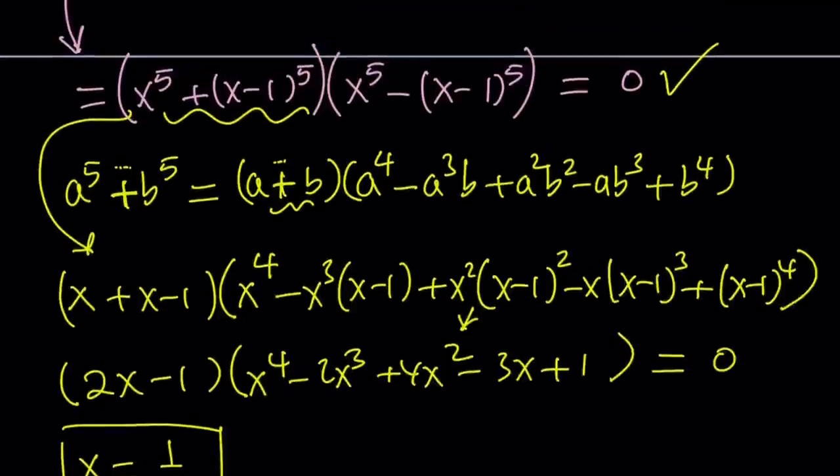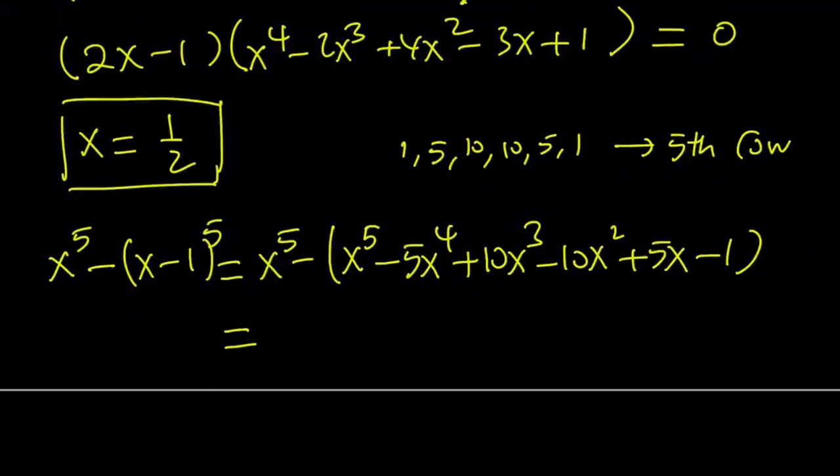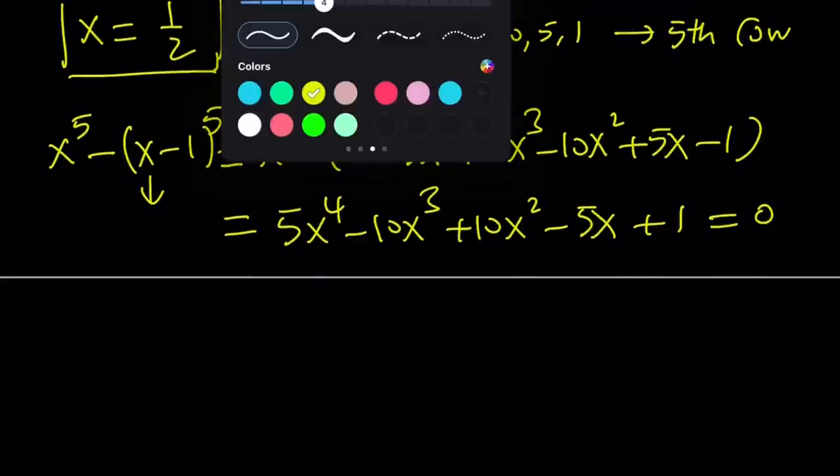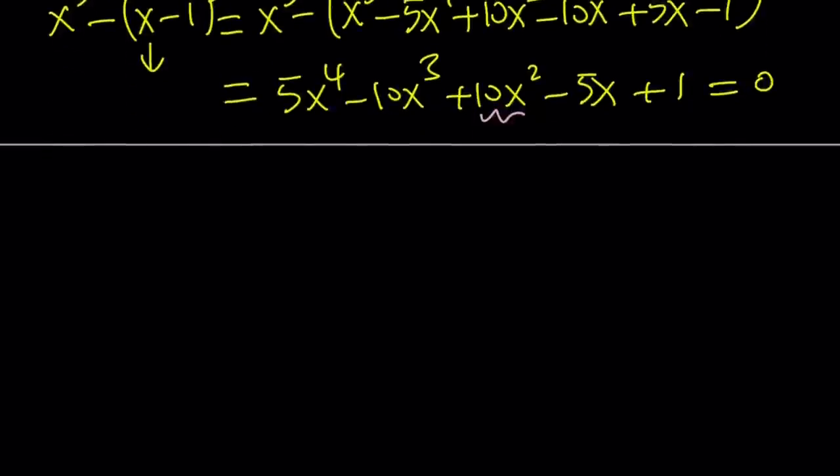Let's go ahead and take a look at the difference of two fifth powers. X to the fifth cancels out and everything inside the parentheses will be negated. So you're going to get 5x to the fourth minus 10x cubed plus 10x squared minus 5x plus one. And we're going to set this equal to zero. But solving this equation is going to be a little different.